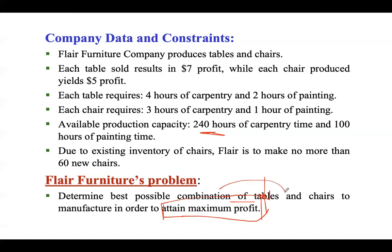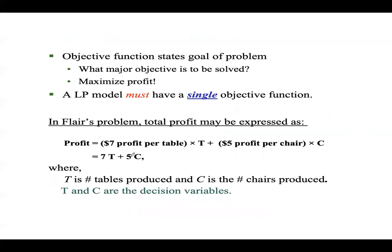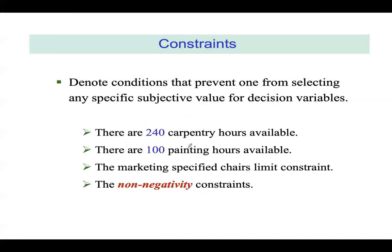We need to find the possible combination of tables and chairs keeping in mind these constraints. Resources are restricted, so we must formulate our problem. For the objective function, if we let t be the number of tables and c be the number of chairs, our profit equation becomes 7t + 5c. This is our objective function — a maximization problem — and t and c are our decision variables.